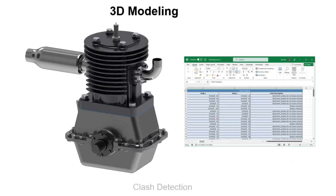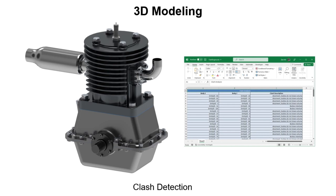TurboCAD's 3D modeling tools have been enhanced with both new features and valuable improvements. First, we've introduced Clash Detection, allowing you to identify conflicts in your design, including intersecting or overlapping parts. The Clash tool identifies over 20 types of relationships, itemizing the results in a spreadsheet report.